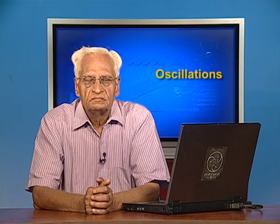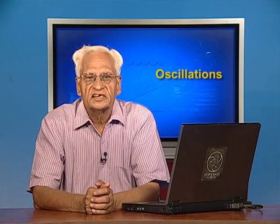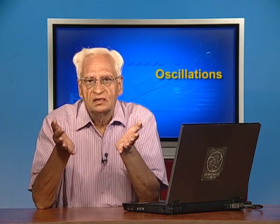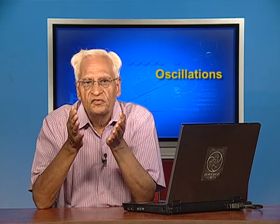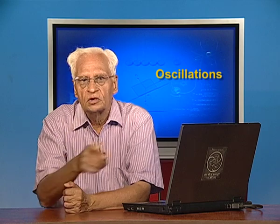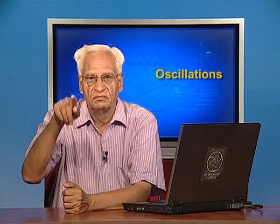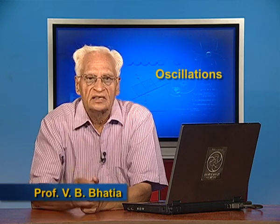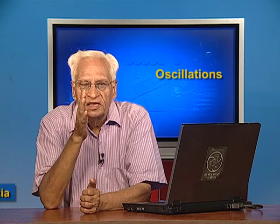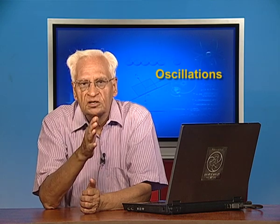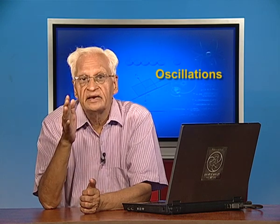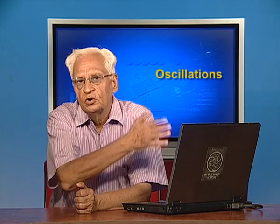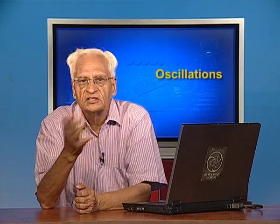We continue with oscillations. In the last lecture we learnt what an oscillation is, and we learnt that oscillations of a system can take place only about a position of stable equilibrium. We also learnt the characteristics of simple harmonic motion: the acceleration of the system is proportional to the displacement and is in the direction opposite to the displacement. Now we shall apply these concepts to do examples.